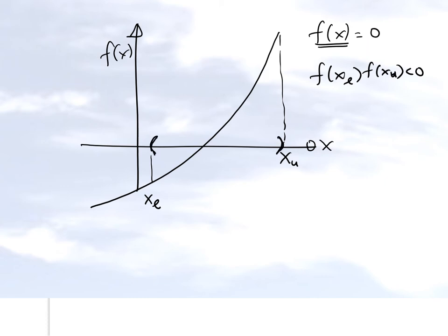How does this help us so far as the bisection method is concerned? What we're going to do is choose the midpoint between xl and xu. So let's suppose it's right here — that is the midpoint. Let's call that xm1, because it's the first iterative value. So I get this as my root. Now I can start with two brackets.